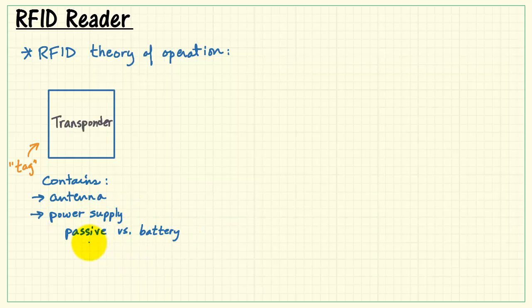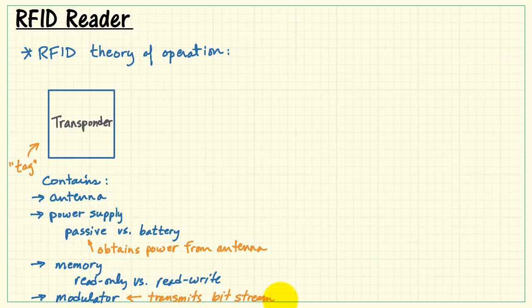And contains a power supply of some sort. You have either the option of a passive TAG or a battery-powered TAG. In the case of a passive TAG, it actually obtains power from its antenna. There's no battery inside. We have either read-only or read-write memory, and then we have a modulator. This is the mechanism for transmitting that stored information back out to the transceiver.